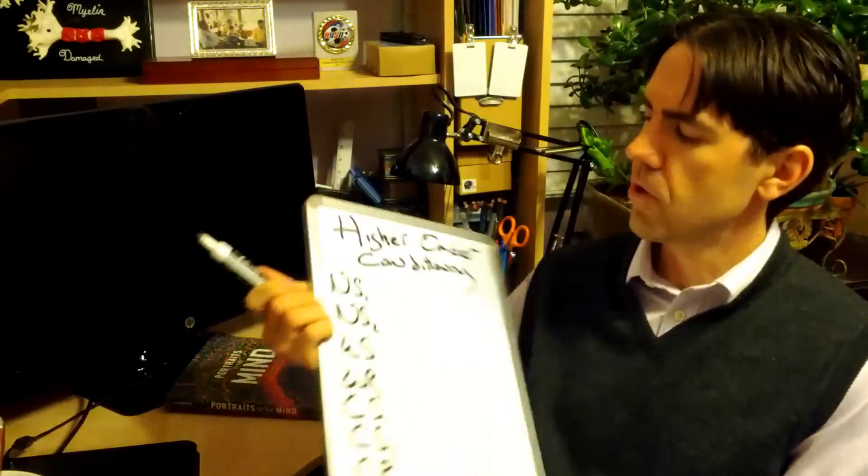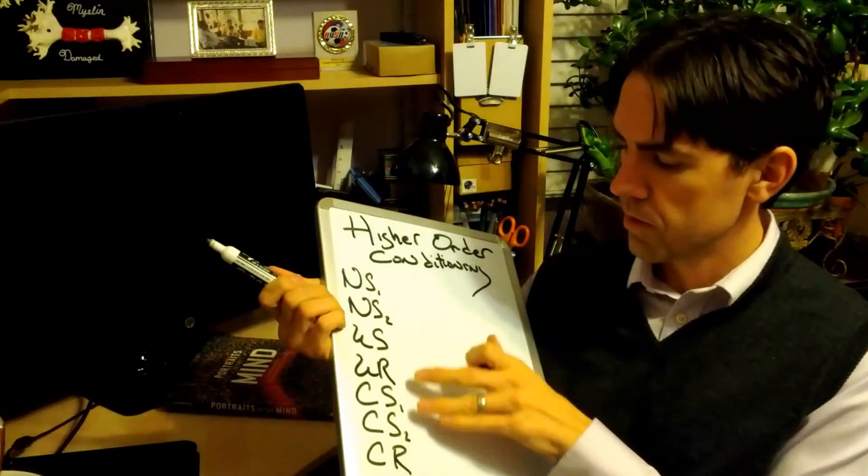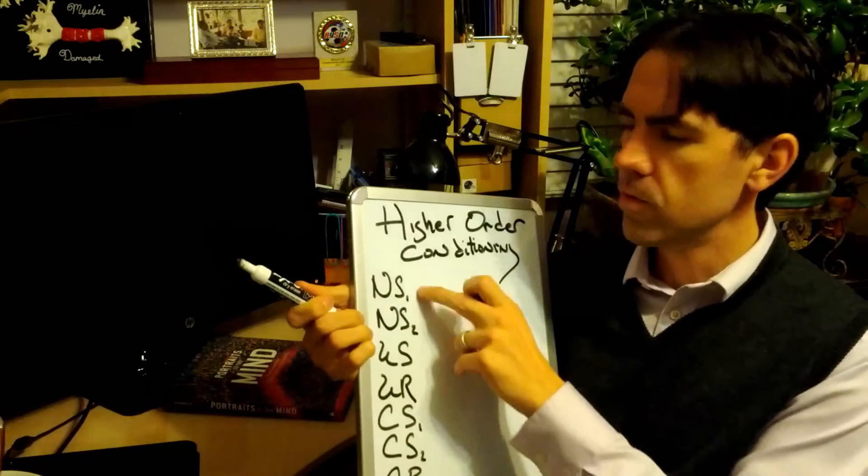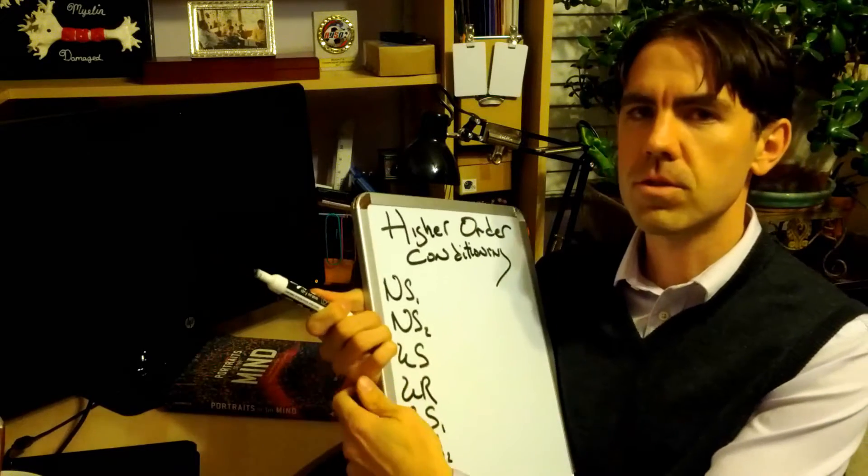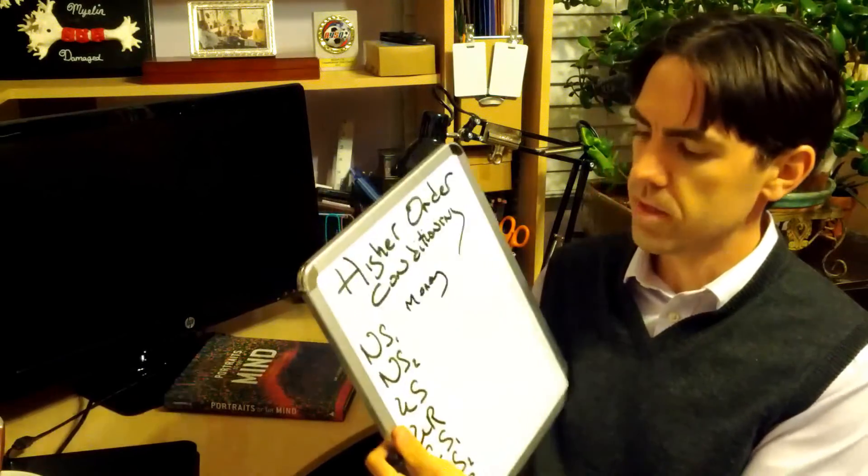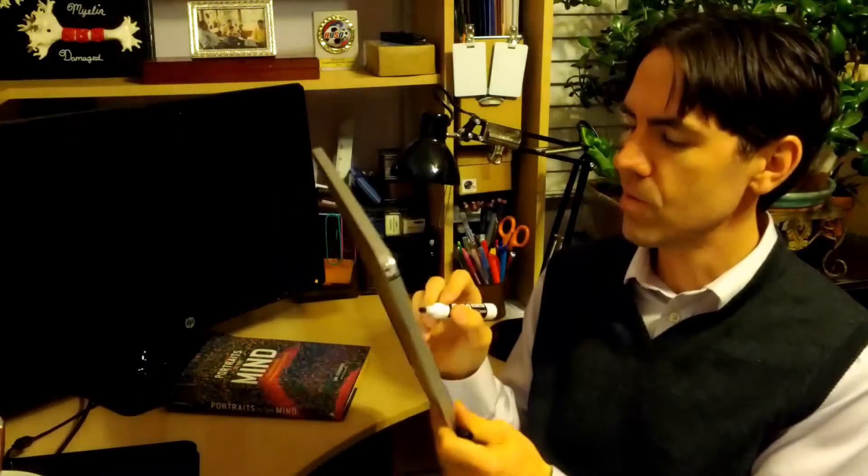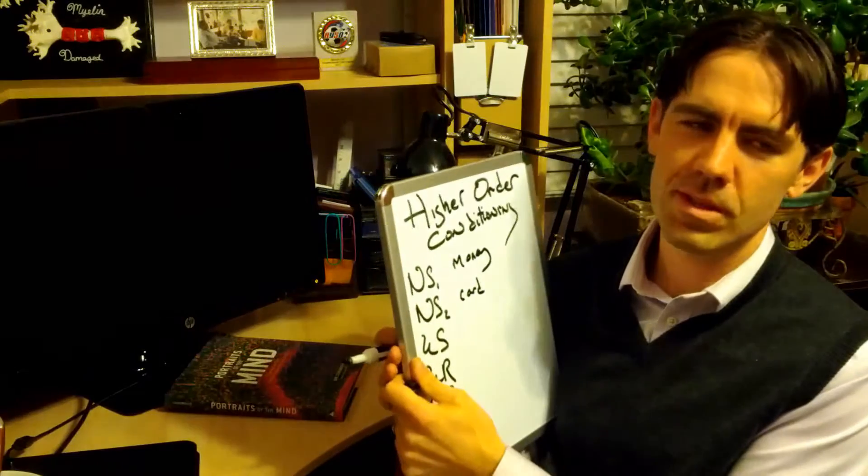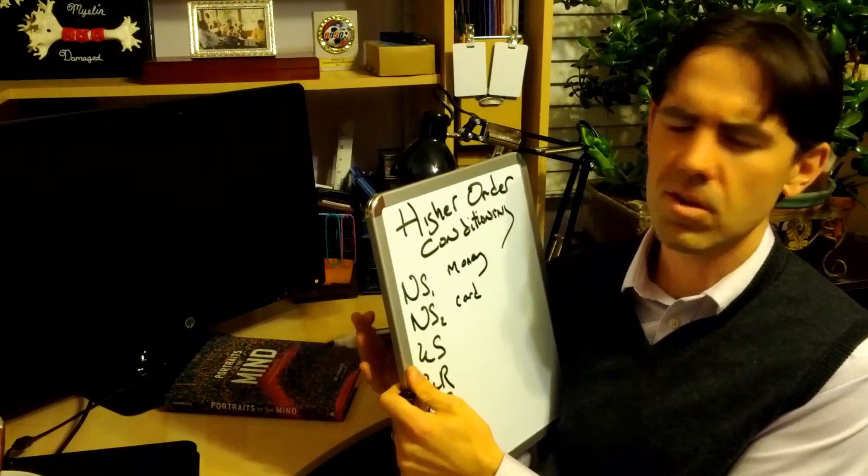So let's explain that here on my trusty little whiteboard. We have seven terms here. We have two neutral stimuli. First neutral stimulus, neutral stimulus number one, that's going to be the money. Neutral stimulus number two, that's going to be the card. You can put it as the card or the envelope. Really for this demonstration they're about the same thing.